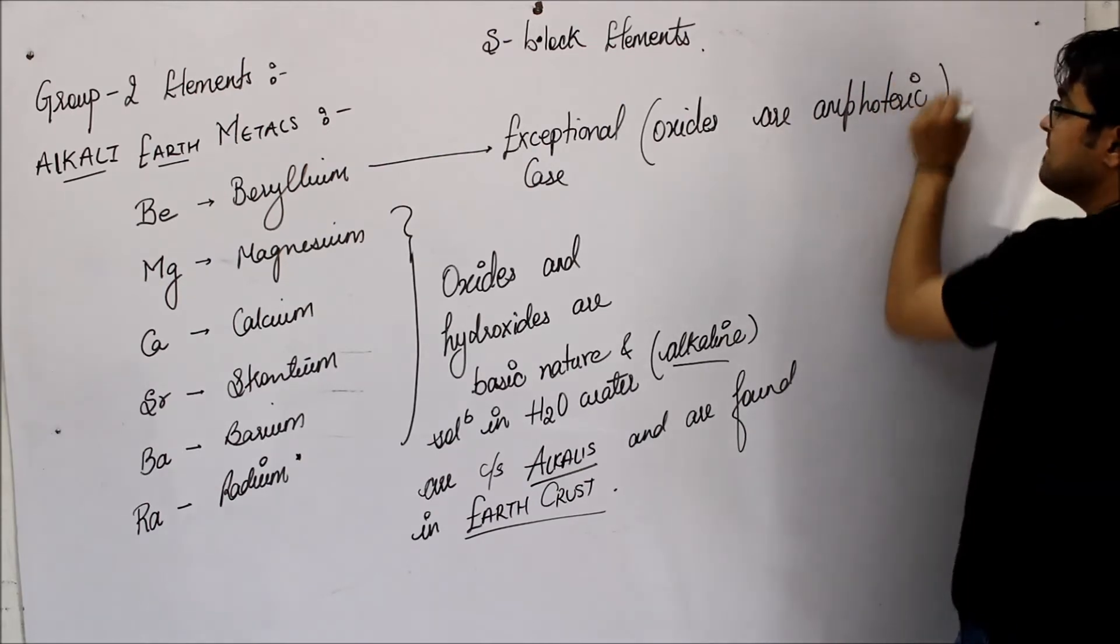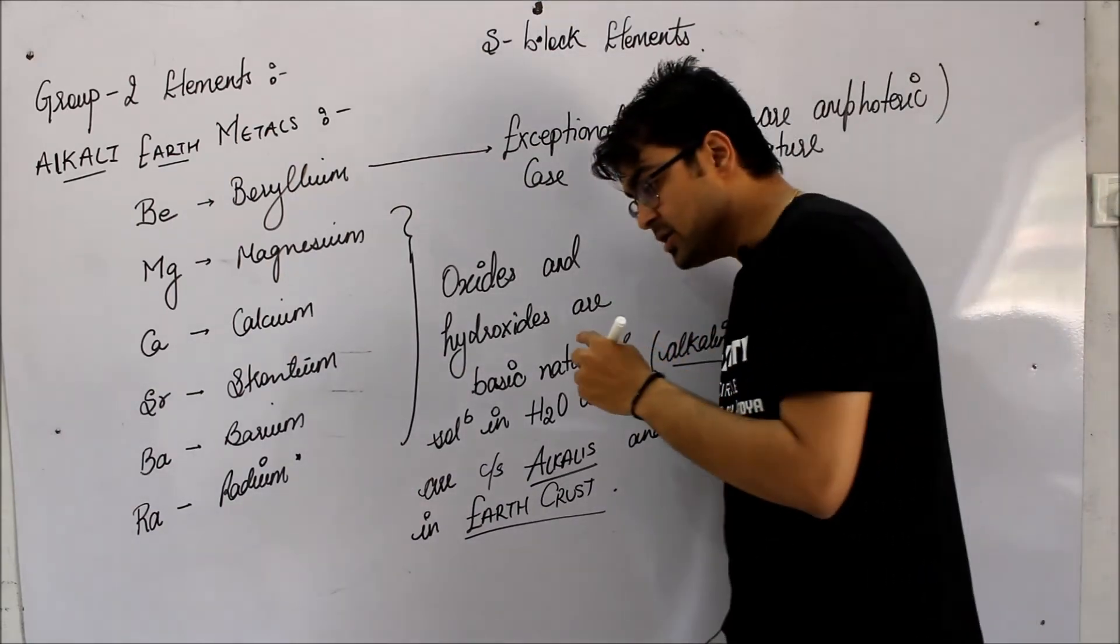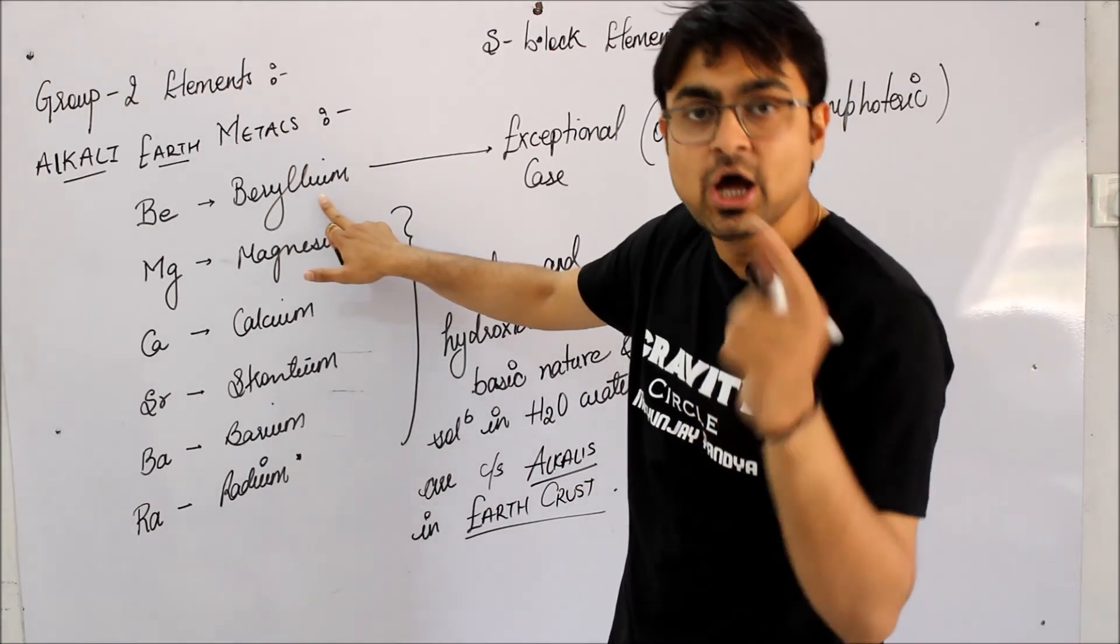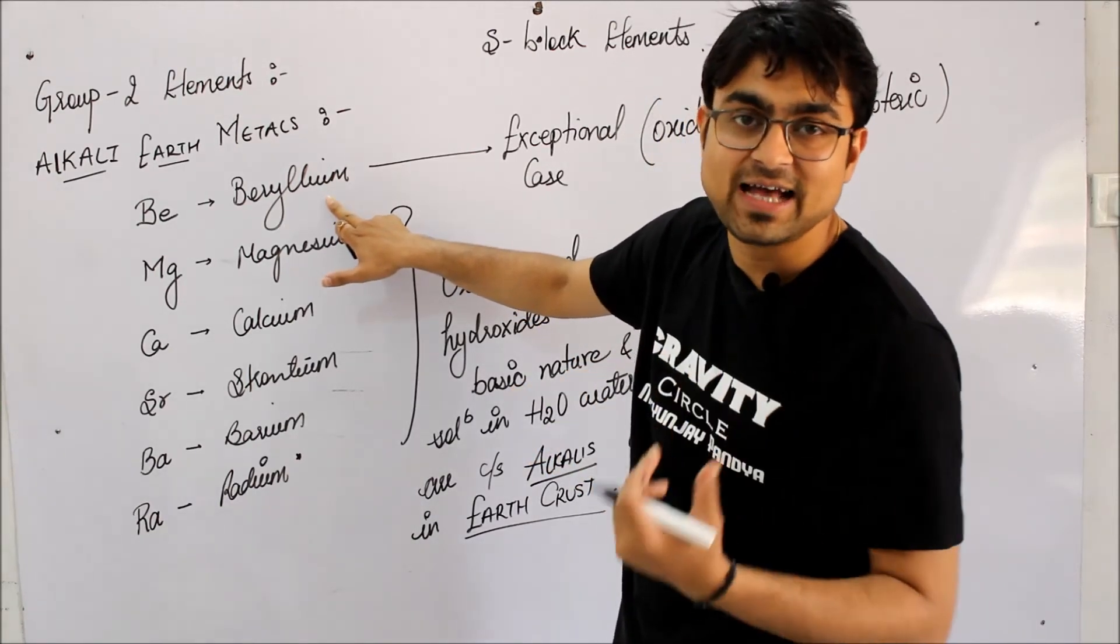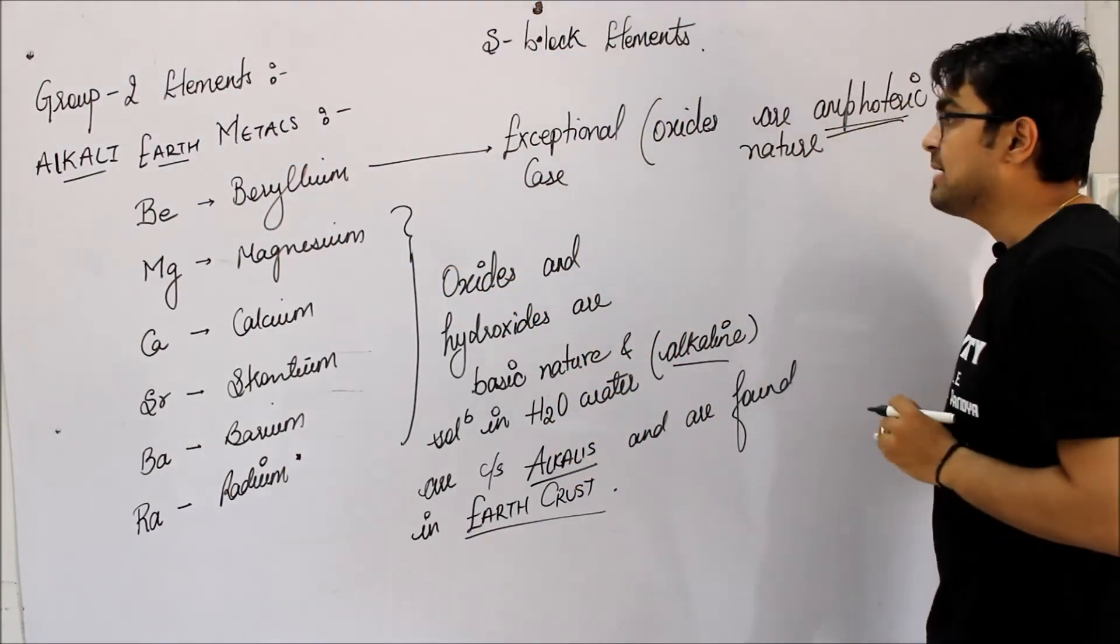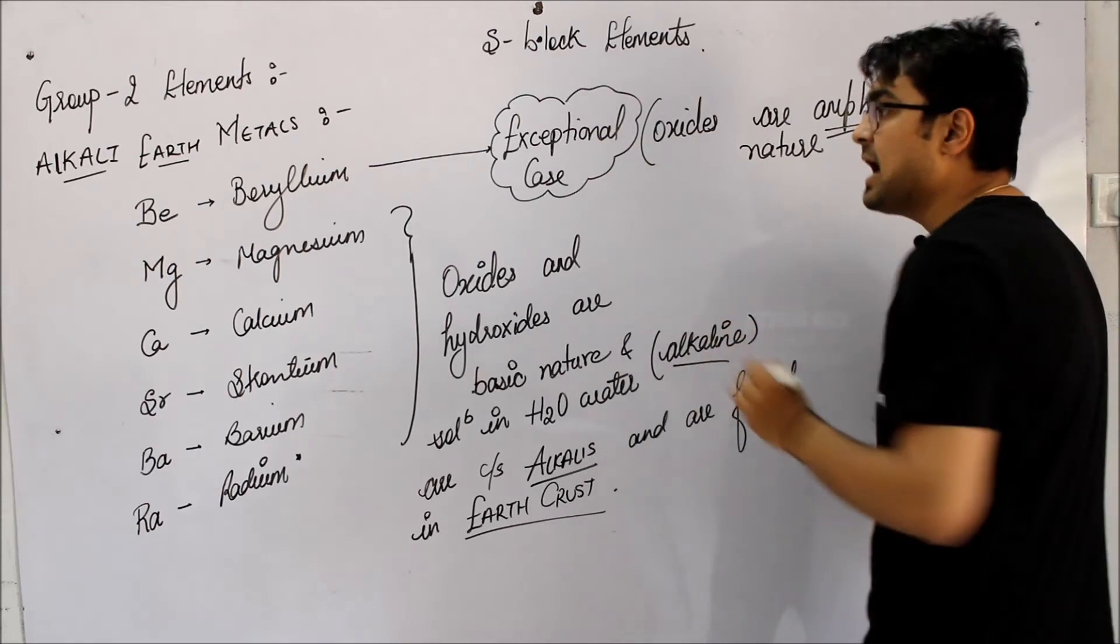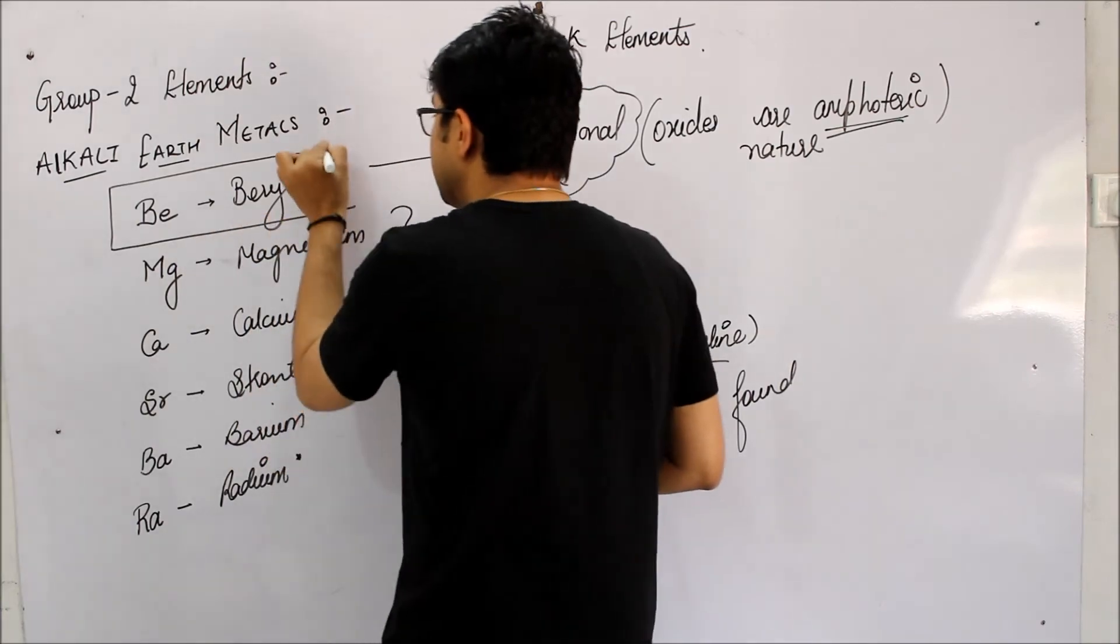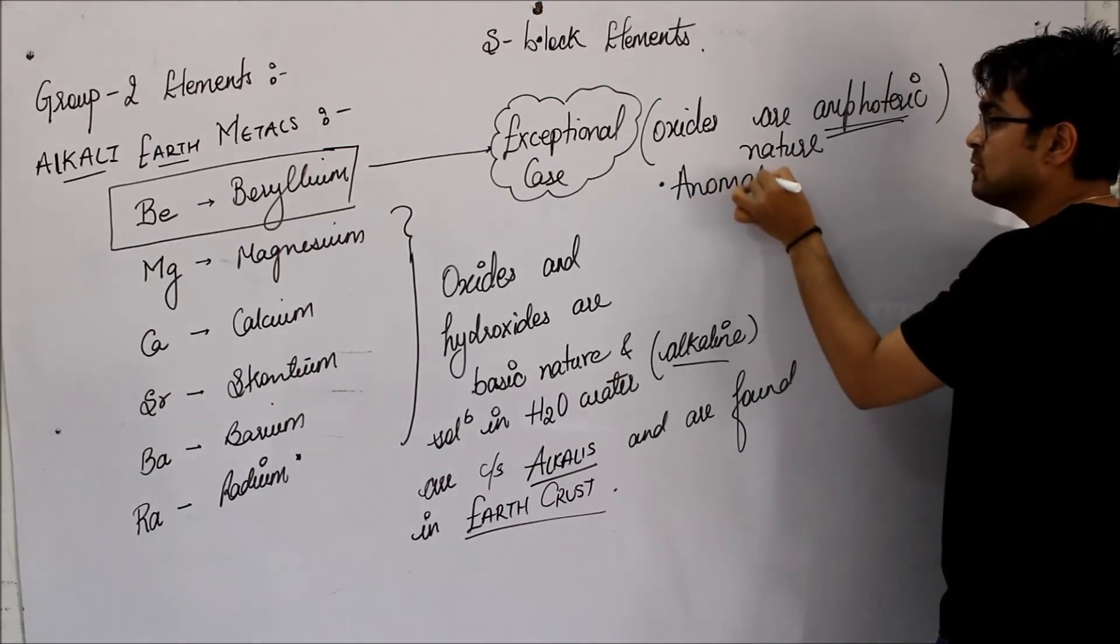Meaning that when the time comes, it acts as acid, and when the time comes, it acts as base. When you react beryllium oxide with an acid, it will act as a base. And if you react beryllium oxide with a base, it will act as an acid. And in both cases, it will produce salt. That is why it is an exceptional case due to its amphoteric nature. And one more thing: being the first member of the group, it will also show anomalous properties. We know all these things.